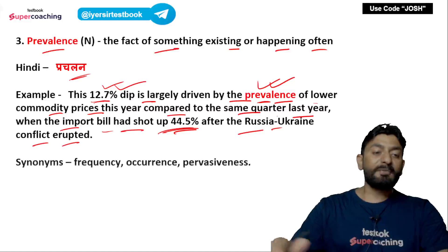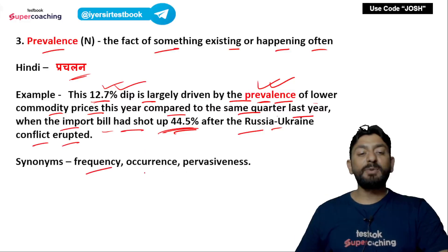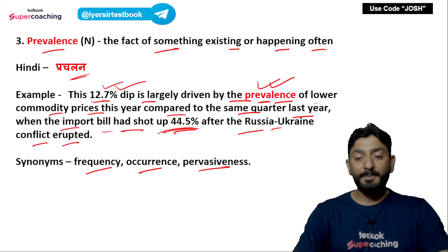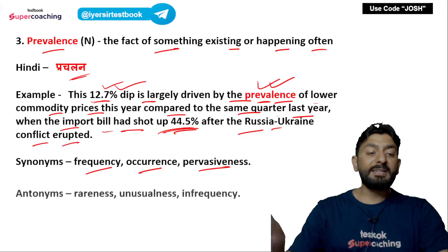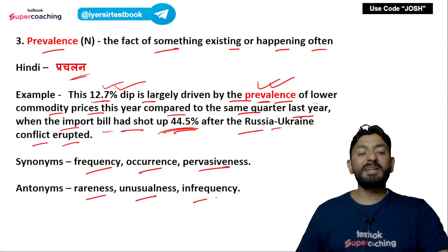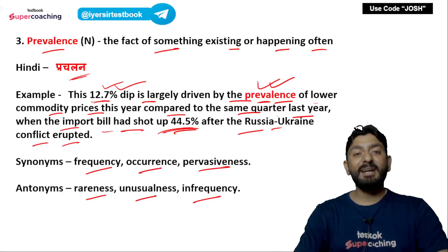Synonyms of 'prevalence': frequency, occurrence, pervasiveness — जो ज़्यादा प्रचलन में रहे. Antonyms: rareness, unusualness, infrequency — these are antonyms for the word prevalence.